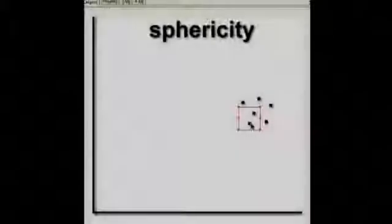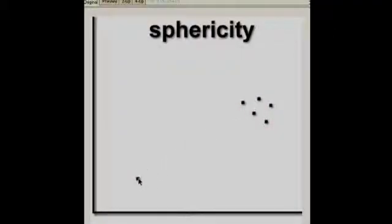So in the assumption of sphericity, if one person moves, think of it as a school of fish, everyone else needs to move in the same way. So if person A responds to treatment 2 very badly, then you would expect everybody else to respond to treatment 2 badly as well.